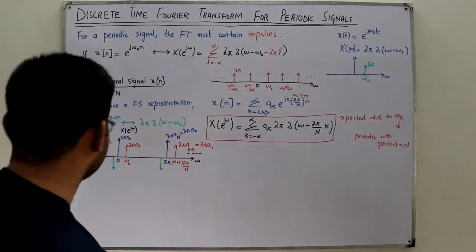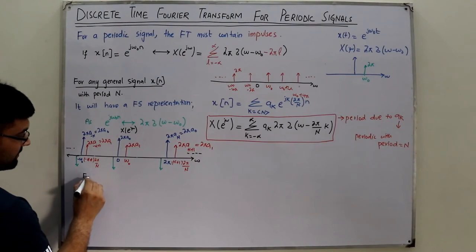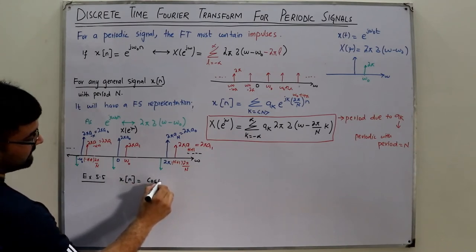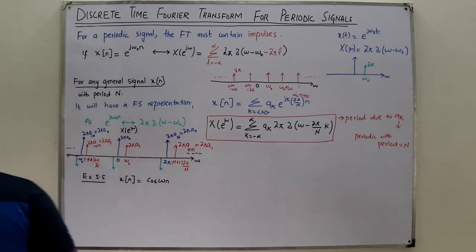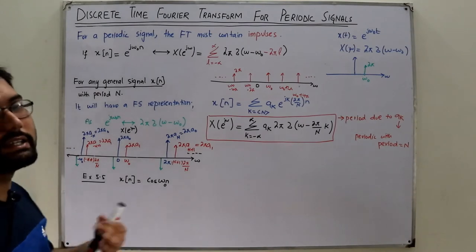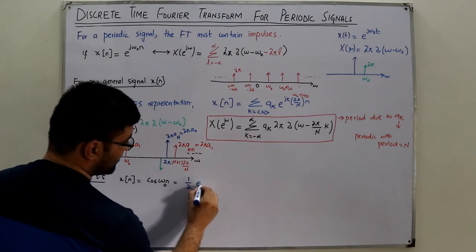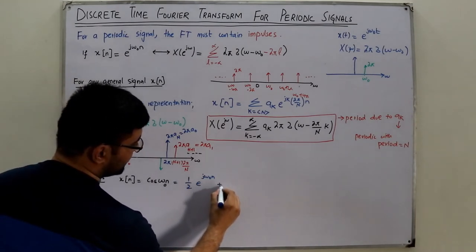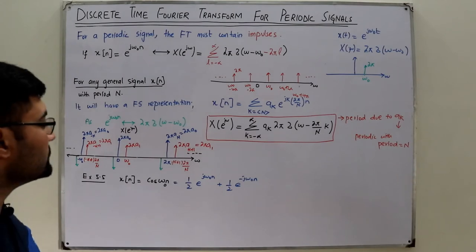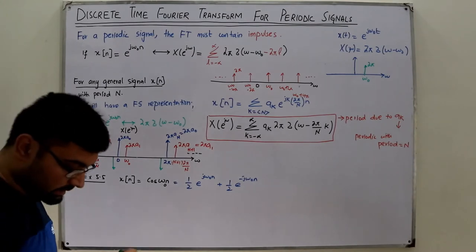Example 5.5: if x[n] = cos(ω₀n), we can directly use Euler's formula: x[n] = (1/2)e^(jω₀n) + (1/2)e^(−jω₀n). We want to find the Fourier transform.